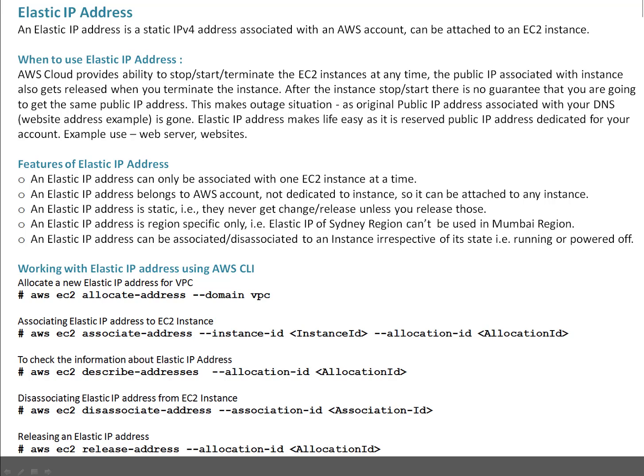Elastic IP address makes life easy. It is a reserved public IP address which is dedicated to your Amazon account, and you can use it for your web services. I have listed a couple of features of elastic IP address. An elastic IP address can only be associated with one EC2 instance at a given time. An elastic IP address belongs to the AWS account — it's not dedicated to an instance, so it can be attached to any instance.